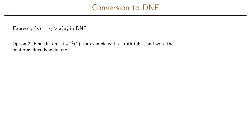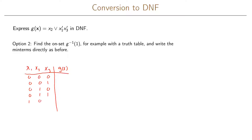Another way to get the disjunctive normal form is to look at the onset directly from the truth table. We write the truth table for this function with three input variables, giving us eight different input combinations. Looking at our expression, if x2 is 1 then the function will always output 1.